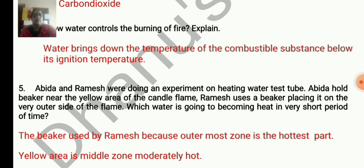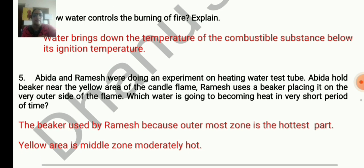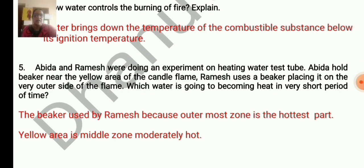Fifth question: Abhida and Ramesh were doing an experiment on heating water using a candle. Abhida held a beaker near the yellow area of the candle flame; Ramesh placed his beaker on the very outer side of the flame. Whose water will become hot in a very short period? The outermost zone is the hottest part. The yellow area is the middle zone — moderately hot. So the answer is the beaker used by Ramesh.